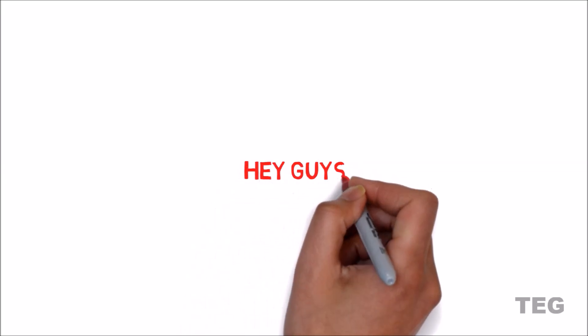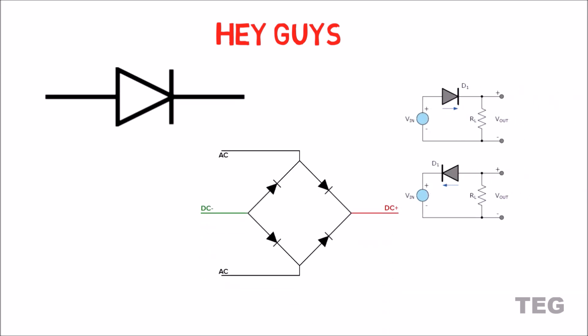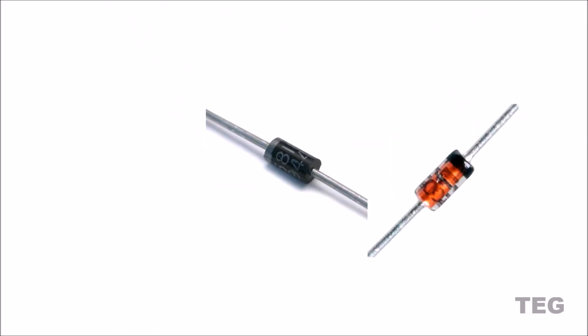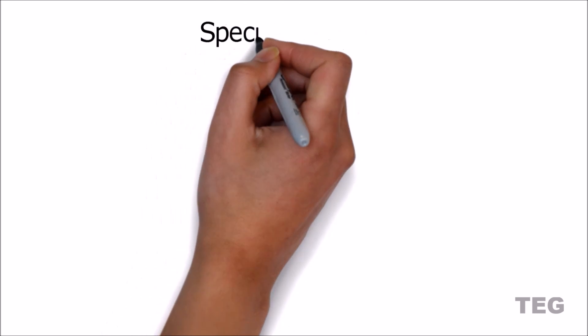Hey guys, welcome back to another video tutorial. You must be familiar with this diode symbol and must have seen it in your books arranged in a half and full bridge rectifier. It's a diode, which is a passive device that allows the flow of current in one direction only. But since there are so many types of diodes, how do you differentiate between them and, most importantly, which one to use in your circuit? In this video we are going to see the Schottky diode and when to use one, but before that let's see some basic specifications of a diode.